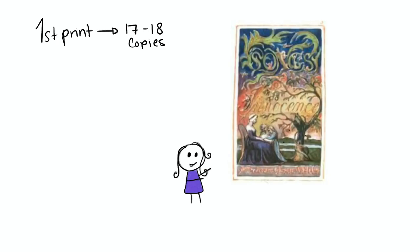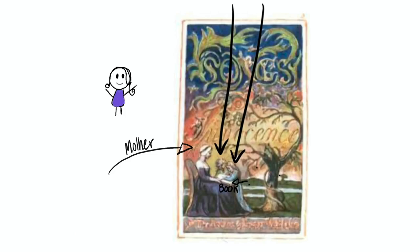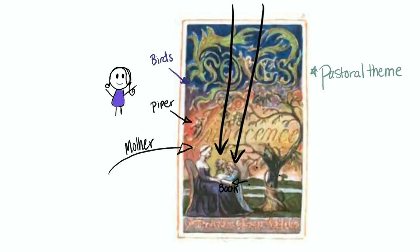In the cover for Songs of Innocence there are two children kneeling next to their mother, who is holding a book and the children are leaning over it. You can see the pastoral theme even in the cover as the children are outside in the countryside. There are birds flying up through the letters, a piper on the letter I which you will see in the introduction, an angel in the letter N, and children playing around in the letters O and G.